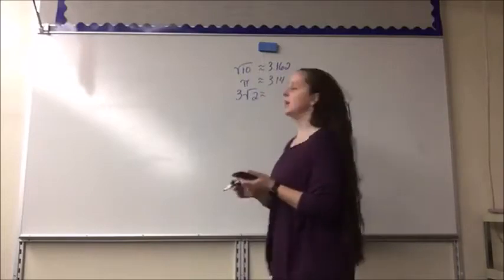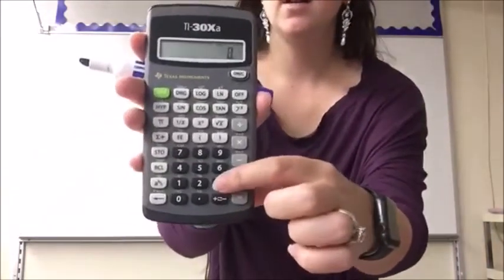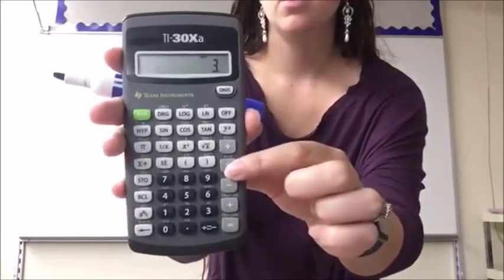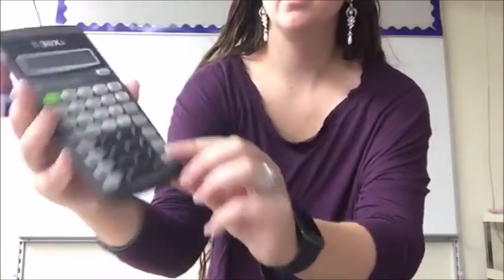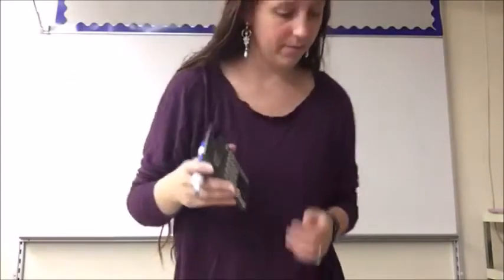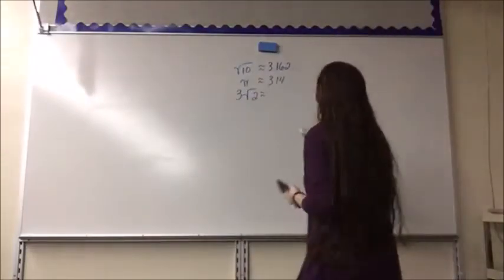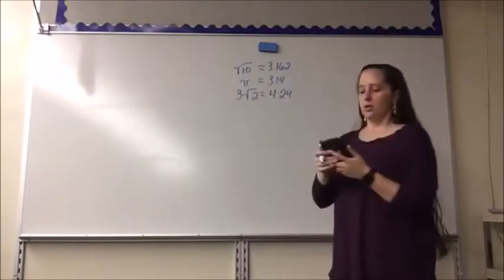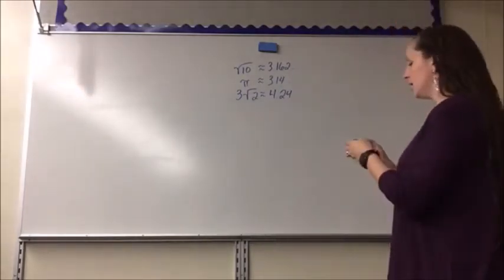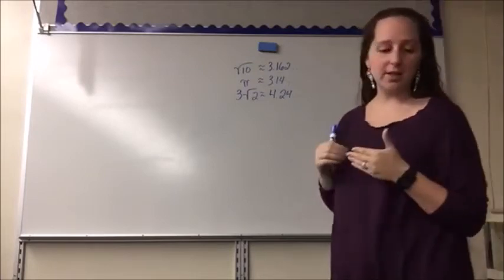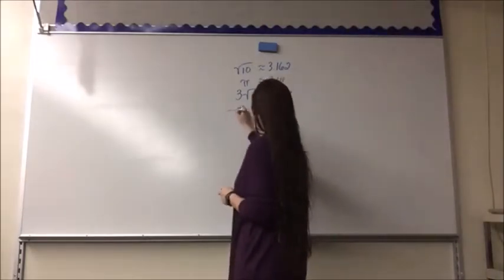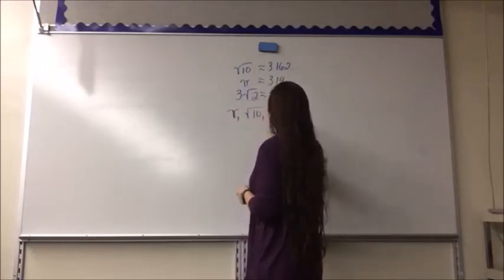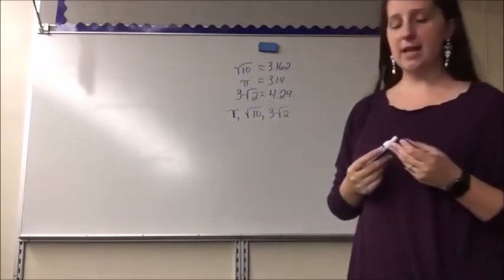For 3 times square root of 2, I enter 3 times 2 and then hit the square root button, giving me approximately 4.2. Pi is approximately 3.14. Now with these decimals it's easy to order them from least to greatest: pi (3.14), then square root of 10 (3.16), then 3 times square root of 2 (4.2).